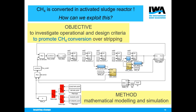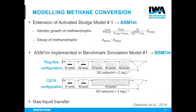We investigated which operational and design conditions could promote methane conversion over stripping, through mathematical modeling and simulation. We started from the Activated Sludge Model No. 1 (ASM1) and extended it with aerobic growth and decay of methanotrophs, assuming Monod kinetics with parameter values from literature. We called the resulting model ASM1M, implemented in BSM1 — a virtual wastewater treatment plant with pre-denitrification configuration consisting of two anoxic and three aerobic reactors in series.